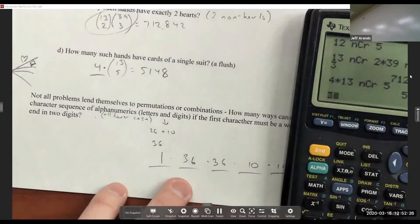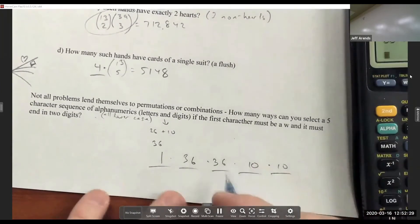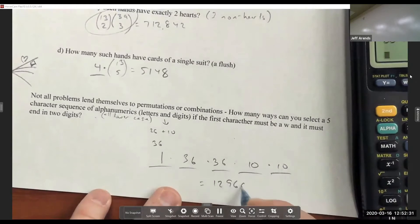So we get 36 squared times 100, which is 129,600.